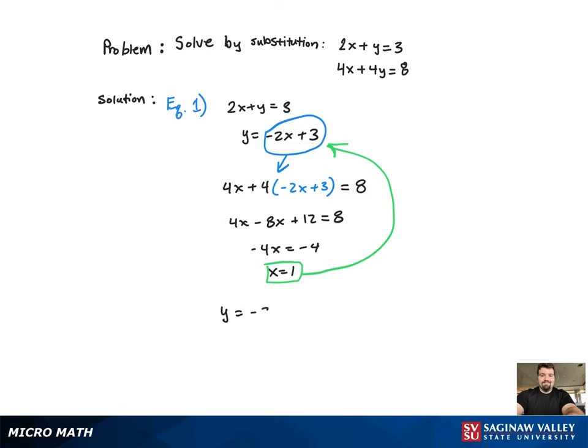Now I simply plug that back in and solve for y. When I do that, I find out that y is also equal to 1. So the ordered pair solution is (1, 1), and the graph will be provided.